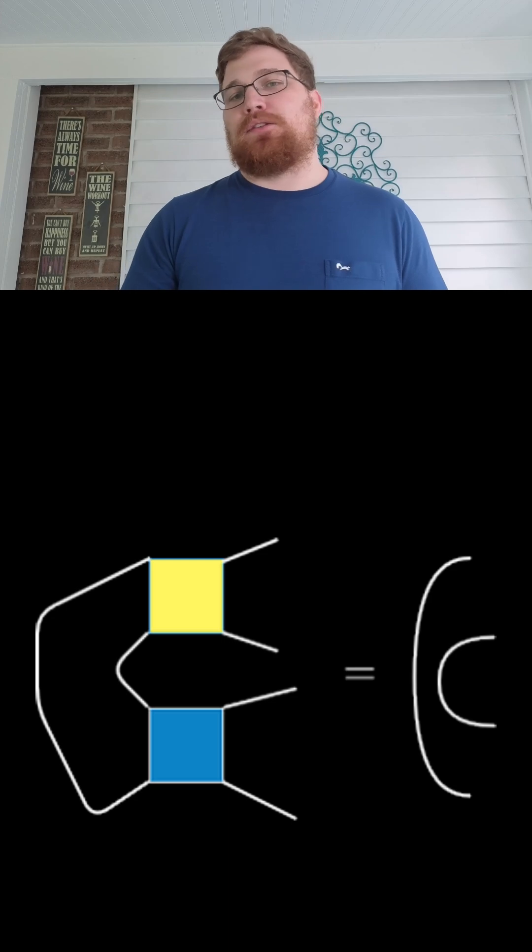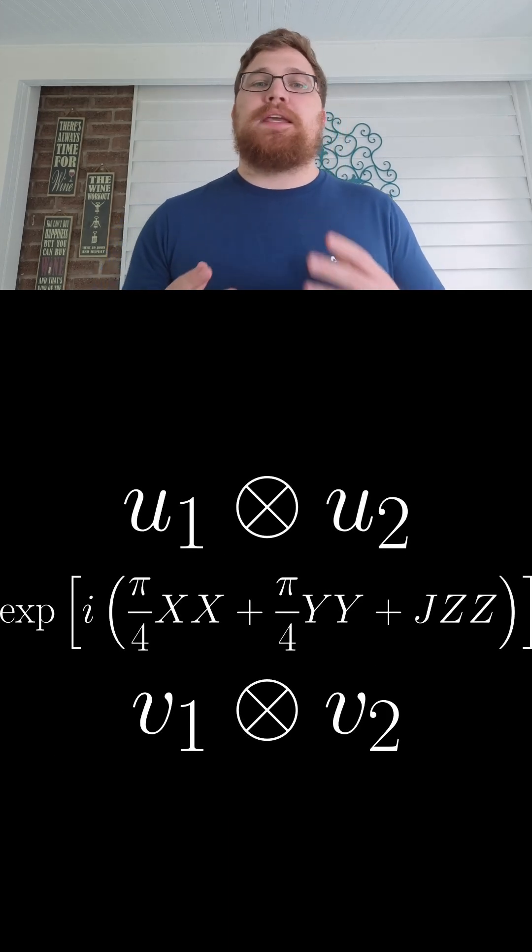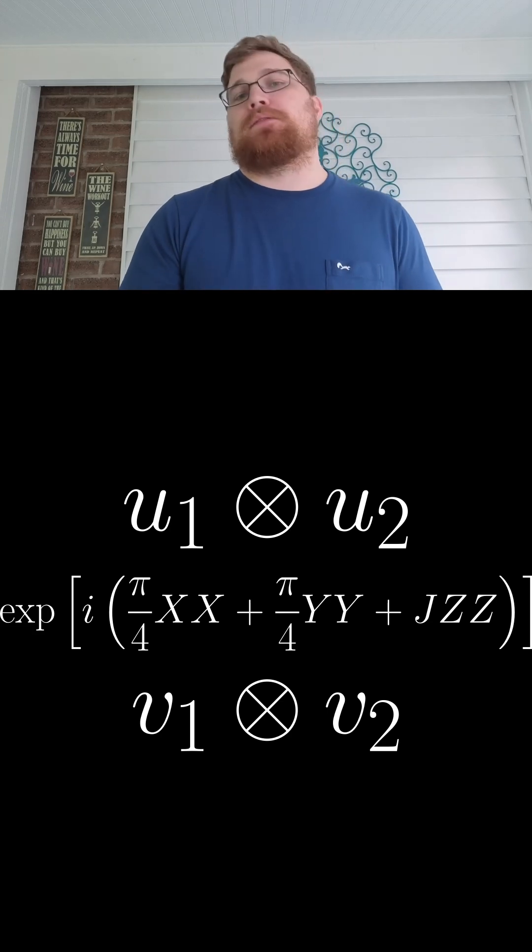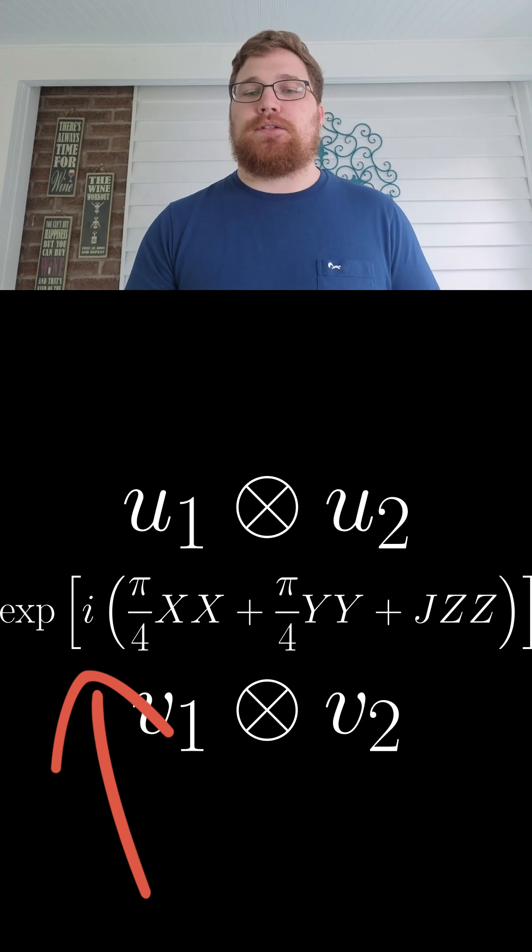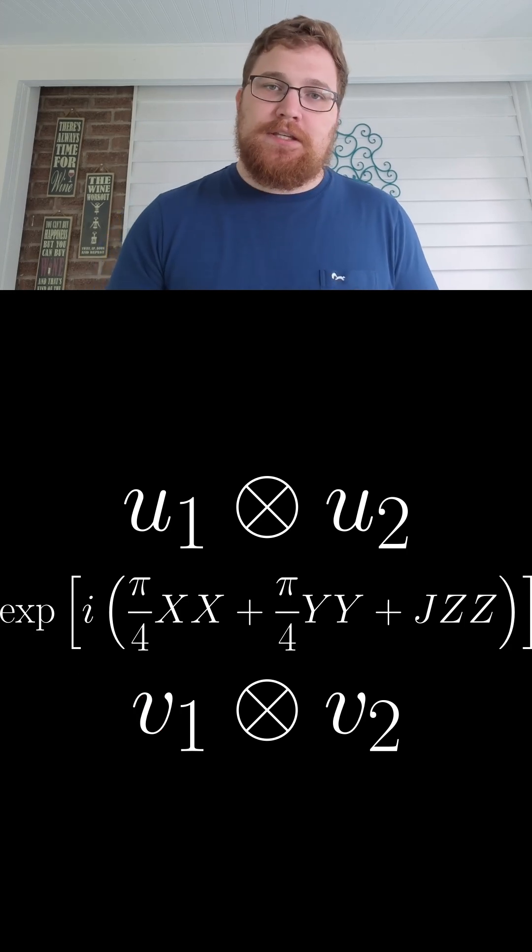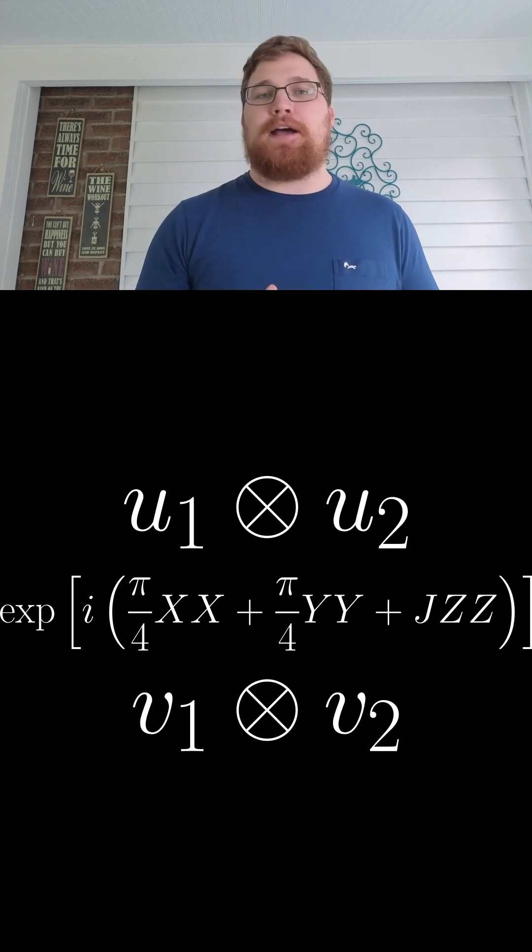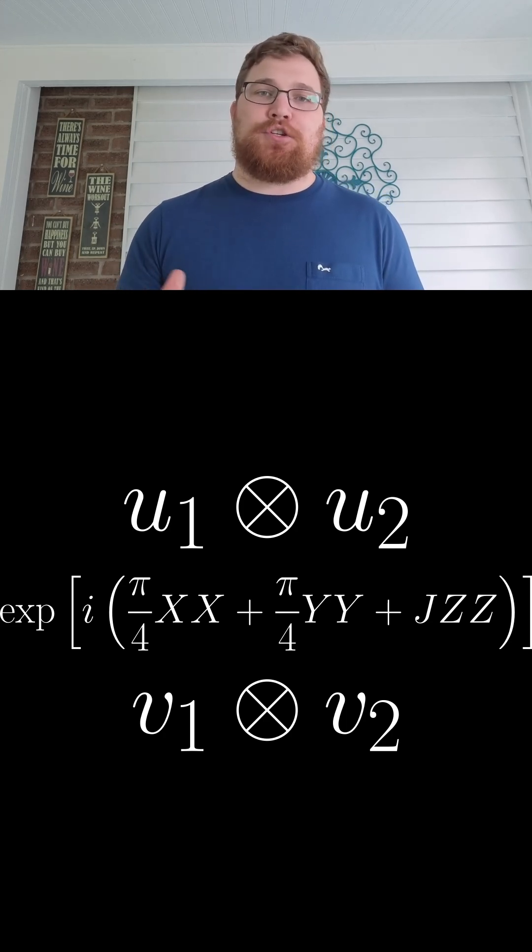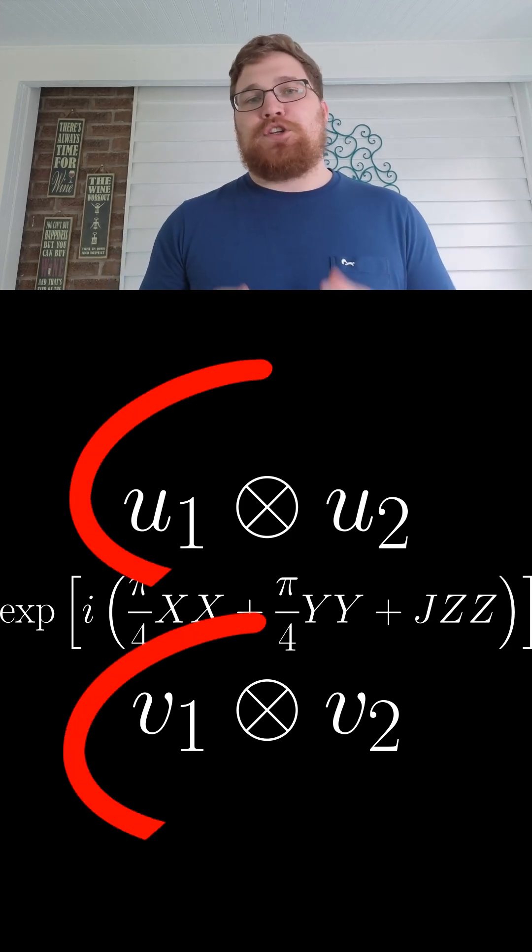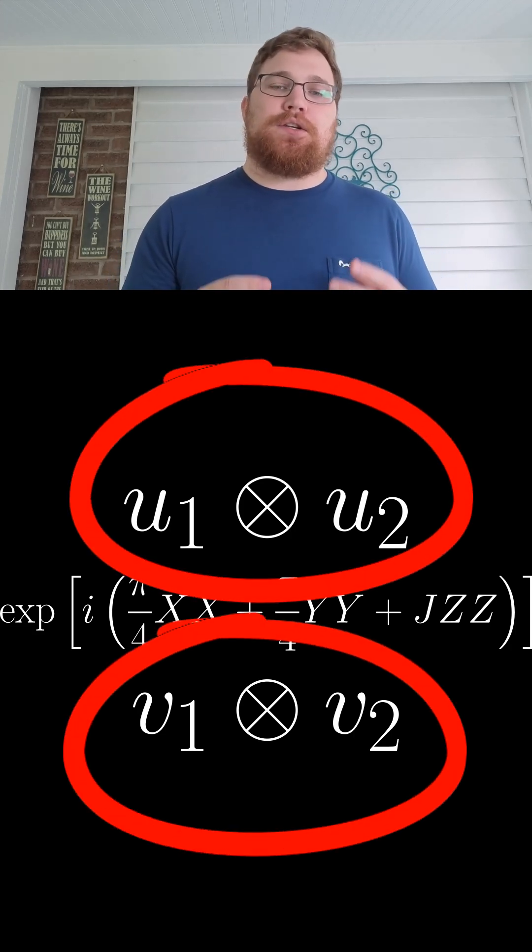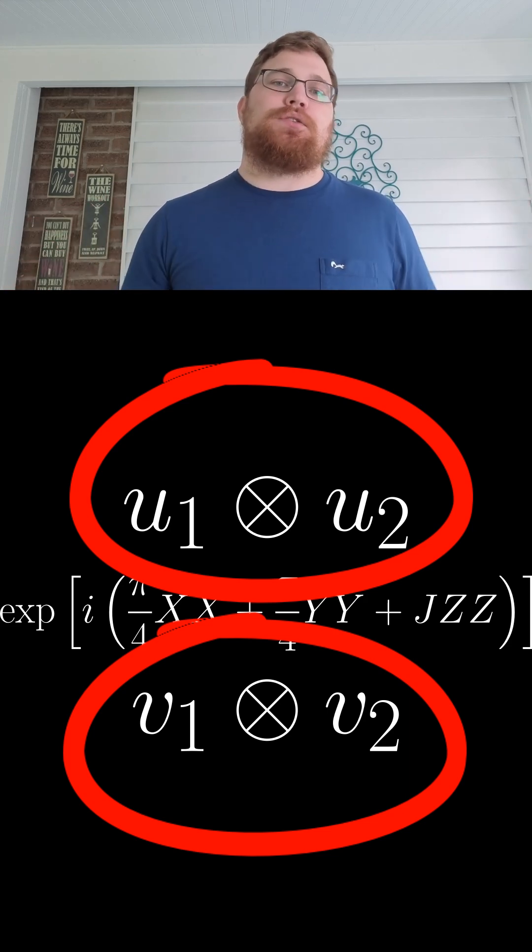The parameterization of the gate looks like the following equation. Inside of the exponential, we get all of our two-qubit properties with XX, YY, and ZZ interactions. The only constraint that we have is that two of the three interactions have to be fixed to pi over 4. The third interaction parameter can be whatever value you want it to be. And then we can have whichever single-site unitaries you want on the left and the right-hand side of the interaction unitary.